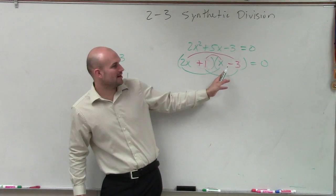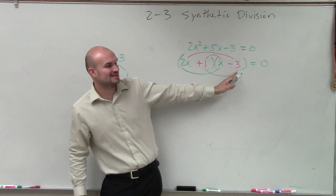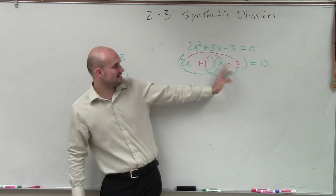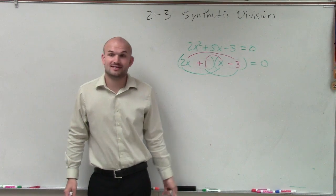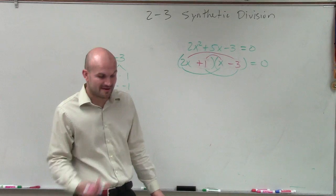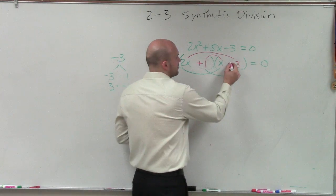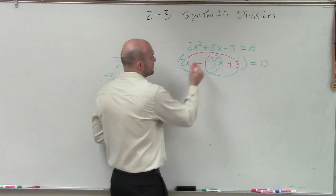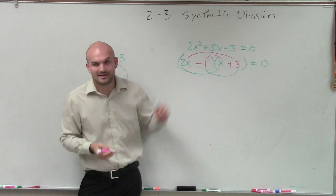1 times x is 1x, and 2x times negative 3 is a negative 6x. Negative 6x plus 1x is going to be negative 5x. So that doesn't work because we need a positive 5x. So I should determine, well, what if I make that positive and then negative? And there you go.